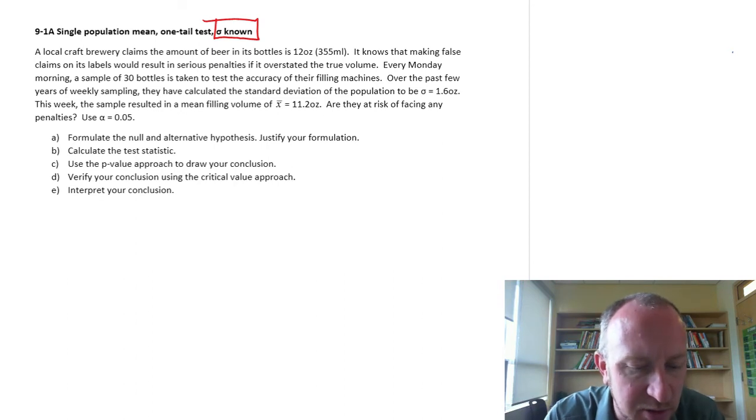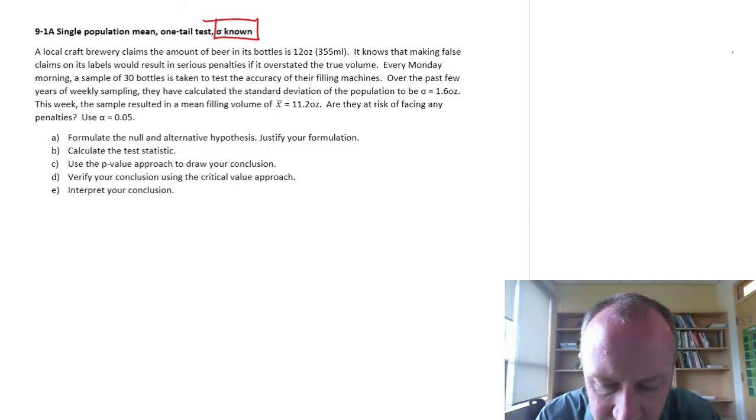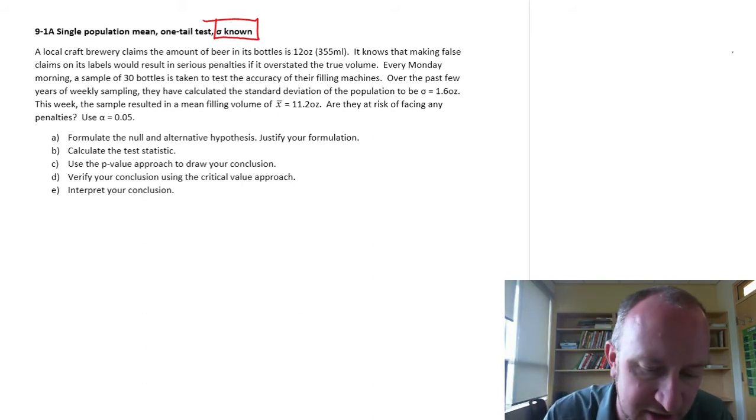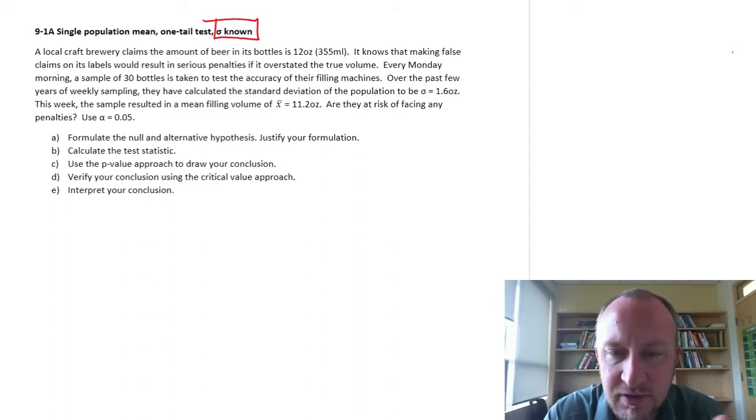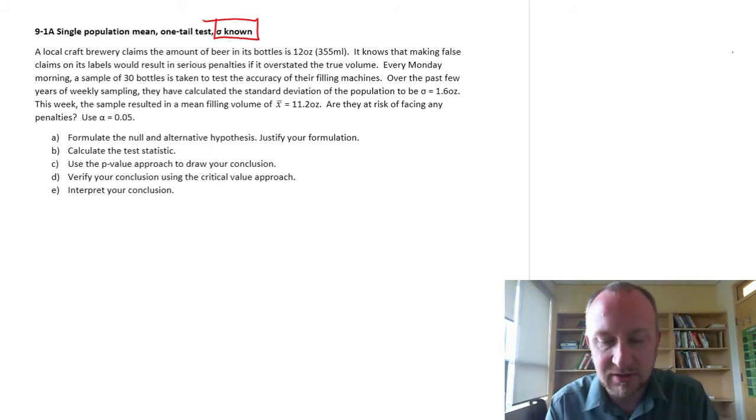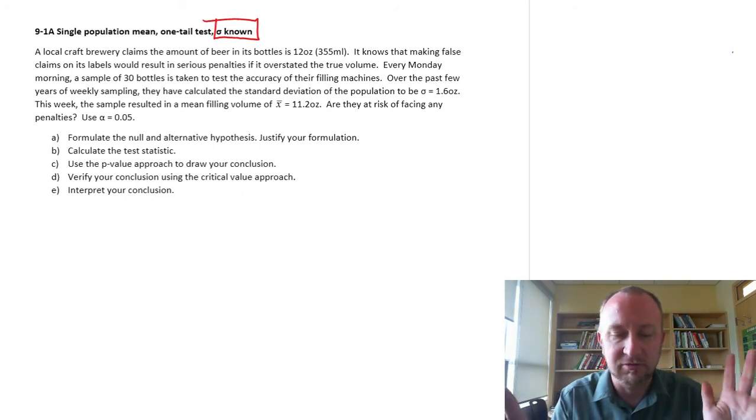Here we have a local craft brewery that claims the amount of beer in its bottles is 12 ounces. If we make false claims on the labels that could result in some serious penalties if it overstates the volume. Every Monday morning we take a sample of 30 bottles to test the accuracy of the filling machines. Over the past few years of weekly sampling, we've obtained the standard deviation of the population is 1.6 ounces, and then we have our sample filling volume 11.2 ounces. We want to know, are we at risk of facing any penalties?